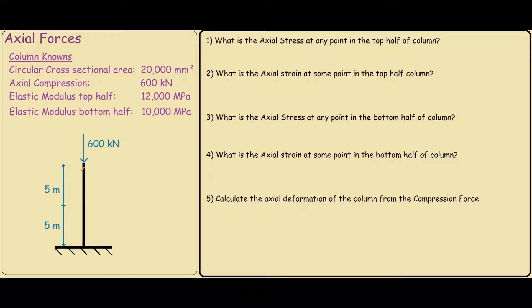And we are also told that the column is made of two different materials because we can see that the elastic modulus at the top is different to the elastic modulus on the bottom. So the top is 12,000 MPa and the bottom is 10,000 MPa.